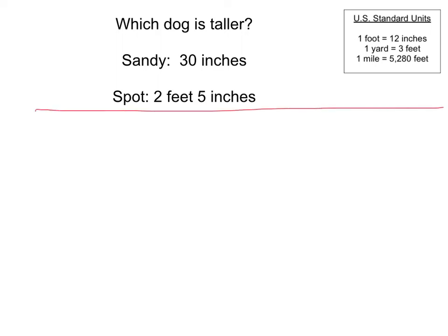So let's split this, and we'll do it in two different ways. So the first way I'm going to try is by making them both into feet. Well, we already know that Spot is 2 feet 5 inches. So now I need to figure out how many feet is 30 inches. So I'm going to go ahead and take 30, I'm going to divide it by 12, which is how many inches are in a foot.